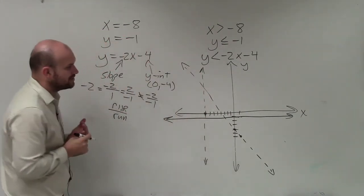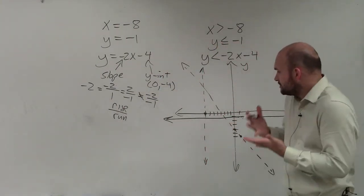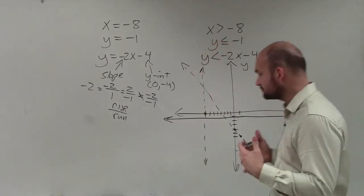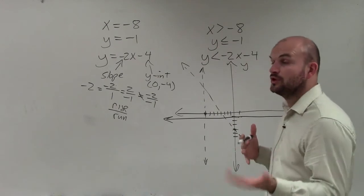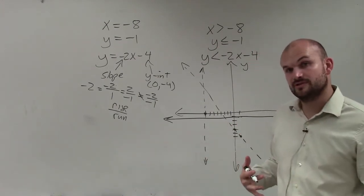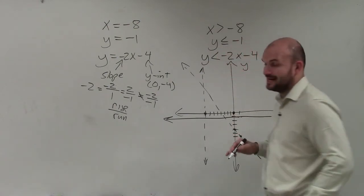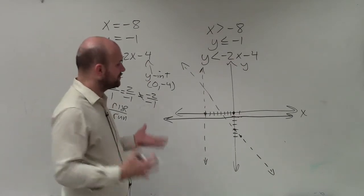Now, the last thing we want to do is go through our testing. And when doing testing, basically, what we're going to want to do is determine where we shade. We know if our boundary lines are a part of the solution or not a part of the solution. But what about the points above and below the boundary line? Are those going to be true or are those going to be false? So to do that, we need to pick a test point that does not lie on any of the lines, and 0, 0 is going to be your best test point to always choose as long as the line doesn't go through it.